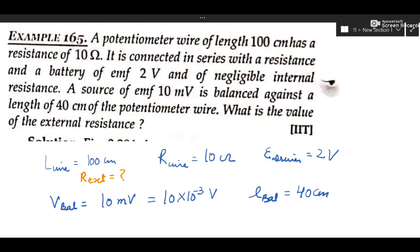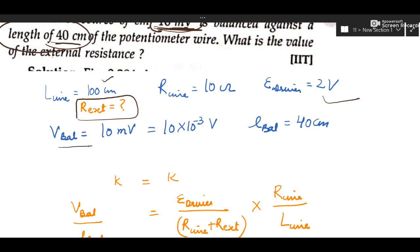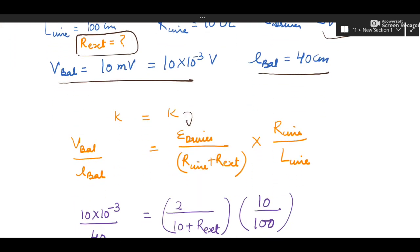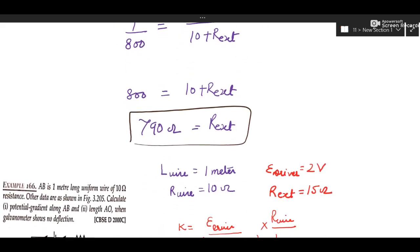A potentiometer wire of length 100 centimeter is a resistance wire connected in series with a resistance and a battery of 2 volt, so E_driver = 2 volt. A voltage of 10 millivolt is balanced against a given length: this gives V_balanced and L_balanced, from which K is found. Using K also from the driver formula, the external resistance is the only unknown and can be found. The solution is duly worked out.